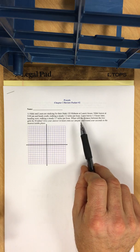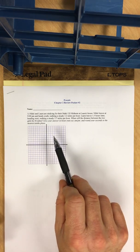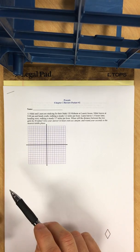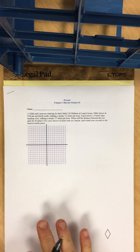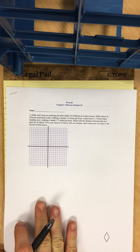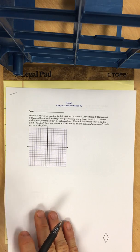Nikki and Laura are studying for their math 120 midterm at Laura's house. Nikki leaves at 9 p.m. and heads south, walking at 3.2 miles per hour. Laura leaves 1.5 hours later, heading west, walking at 3.7 miles per hour. When will the distance between the two girls be 30 miles?